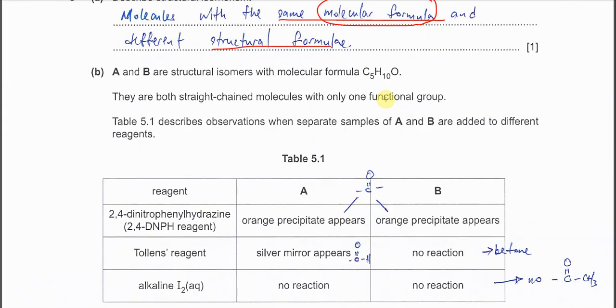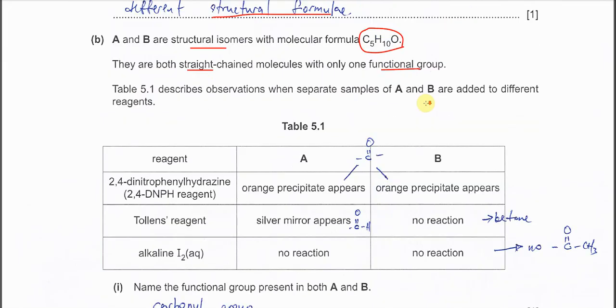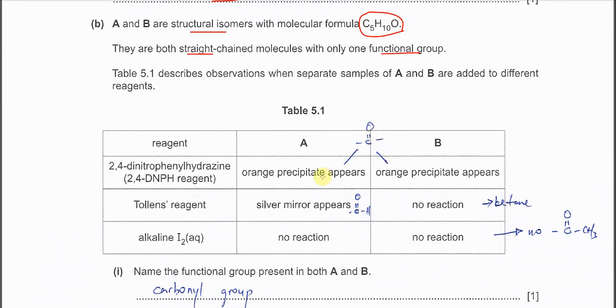Part B. A and B are structural isomers with this molecular formula. They are both straight chain, just one functional group. And this one is the test to identify A and B. 2,4-DNPH: A and B both form orange precipitate. So it's telling us that A and B both have carbonyl groups.